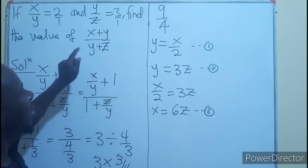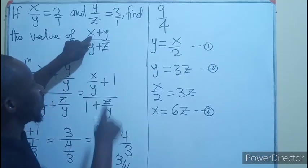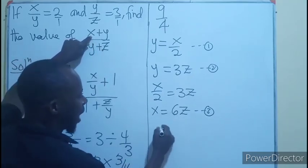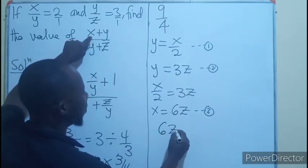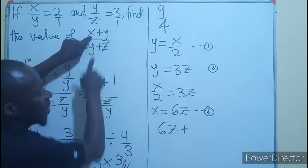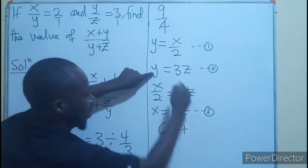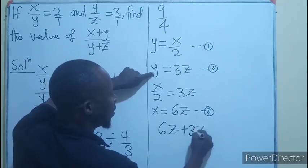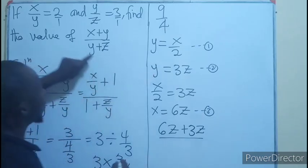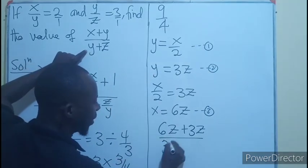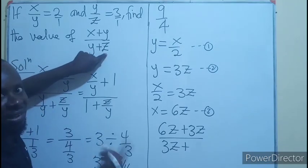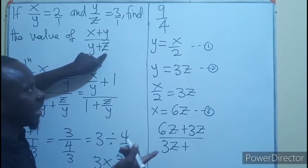So now we can substitute that into this. Whenever I see x, I put 6z plus y. Whenever I see y in terms of z, I will be having 3z, divided by y, which is still 3z plus z. Everything is in z, so I can still remain the z.